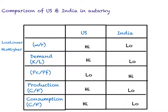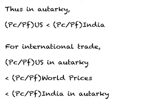This comparison establishes that in autarchy, the relative price of clothing in the U.S. must be lower than the relative price of clothing in India. Since these two relative prices differ, this becomes the basis for foreign trade. If we can find a world relative price of clothing that lies between the two autarchy prices, this becomes the basis for trade. Based on what we know, the U.S. will export clothing and India will export food.